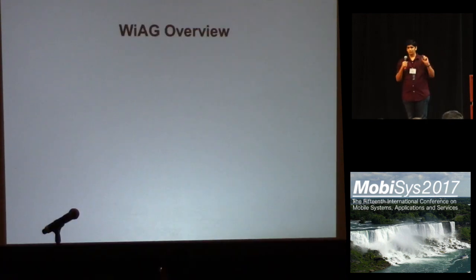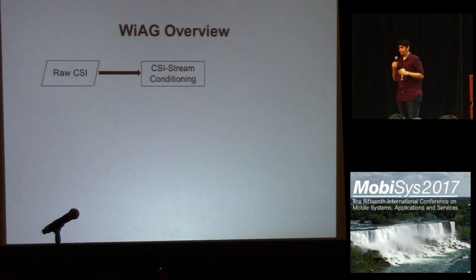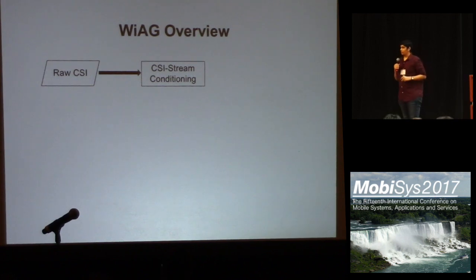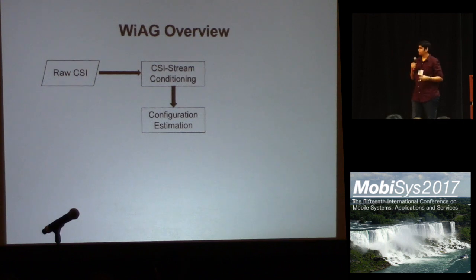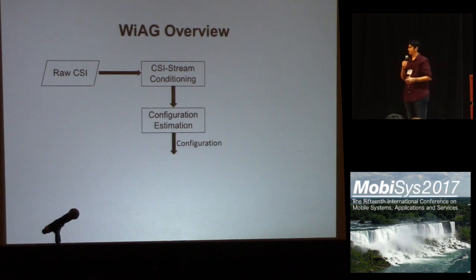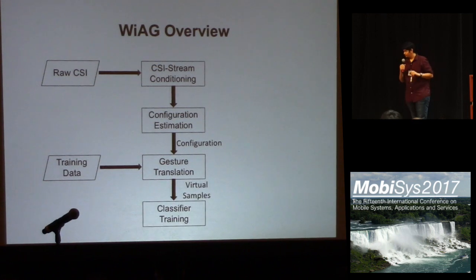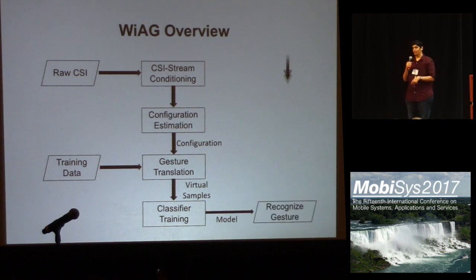I will now present a brief overview of how the IAM system works. It starts with the raw CSI data, conditions it for further processing using PCA, ICA, and other signal processing methods. Next, it uses dynamic time warping-based thresholding to detect the gesture and move it for further processing. In order to use the translation function, we need the user's configuration. We provide a method to automatically estimate the configuration by asking the user to perform a simple reference gesture. Once we have the configuration, we use existing training data from a known configuration, pass it through the translation block to achieve virtual samples at the desired configuration, and feed them into a classification model.